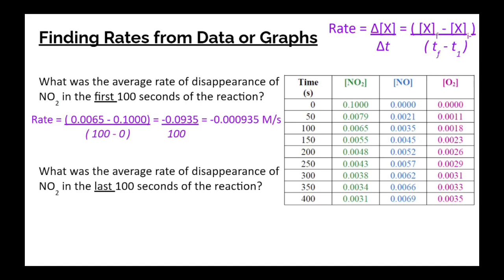Now if we want to do the same thing for the average rate of disappearance of NO2 but focusing on the last 100 seconds of the reaction, we want to look at that 400 and 300 rows. Our rate is equal to the final minus initial so 0.0031 minus the 0.0038 at those specific times over our final time minus initial time so 400 minus 300. When we do the math that equals negative 0.0007 over 100 which is negative 0.000007 molarity per second. And this matches up with what we're seeing in that graph for our green curve because this is leveling out some. It's starting at a much steeper slope with a greater change in concentration over time and then leveling out as the reaction goes.